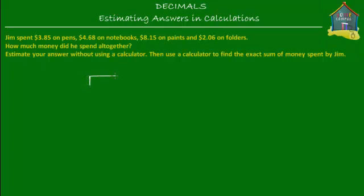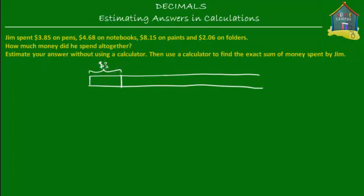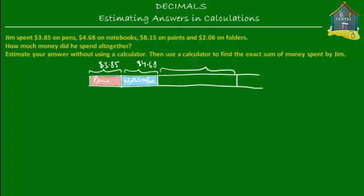Jim spent a certain amount of money at a stationery shop. He bought pens worth $3.85 — so he spent $3.85 on pens. Then he spent $4.68 on notebooks. Then he spent $8.15 on paints, which is the biggest chunk of money.